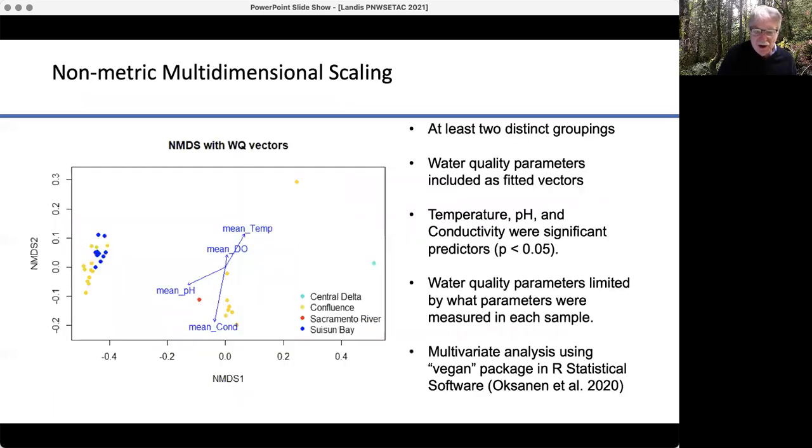We're actually finding out through non-metric multidimensional scaling, and we're also going to be using other multivariate tools to see that temperature, pH, and conductivity are important in talking about the composition of these macroinvertebrate communities. We've not yet put chemicals in here, we're about to do that.